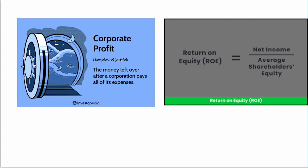If you look at stocks over the long term or even short term, corporate earnings are key. We're of the opinion that the only two macro economic factors you should pay attention to are corporate profits and interest rates. Return on equity is a very simple calculation: you take the net income for the period — companies report every 90 days — and divide that by average shareholders equity, which is assets minus liabilities, or net worth.